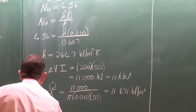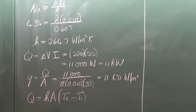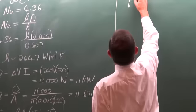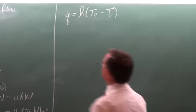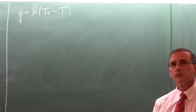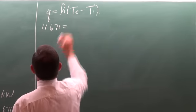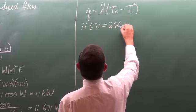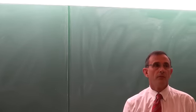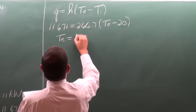The heat transfer rate in general equals the heat transfer coefficient multiplied by the area multiplied by the temperature difference, or in terms of heat flux, the heat flux equals the heat transfer coefficient multiplied by the outlet temperature minus the inlet temperature. From this we can solve the outlet temperature as 64.1 degrees Celsius.